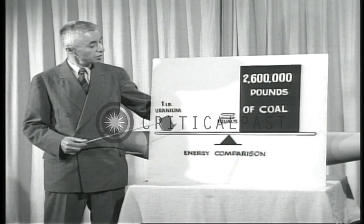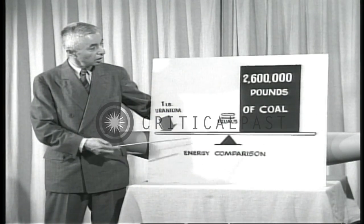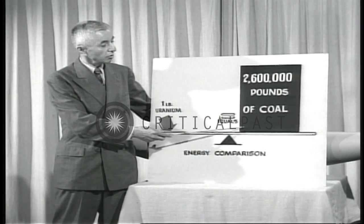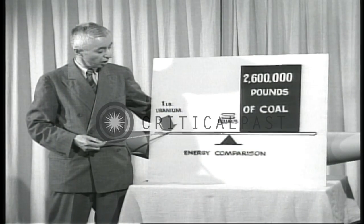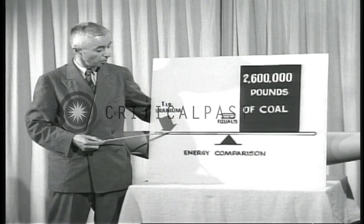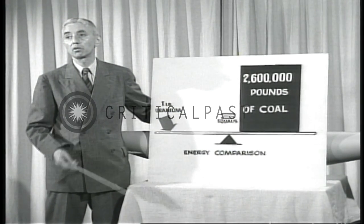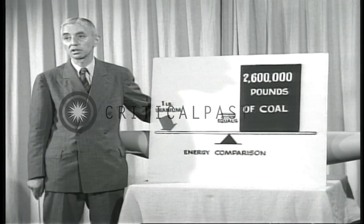This chart shows that one pound of uranium is equal to 2,600,000 pounds of coal. Here is the pound of uranium, which in comparison is so small that it's represented by a pinpoint. One pound of uranium is also equal to 360,000 gallons of gasoline.